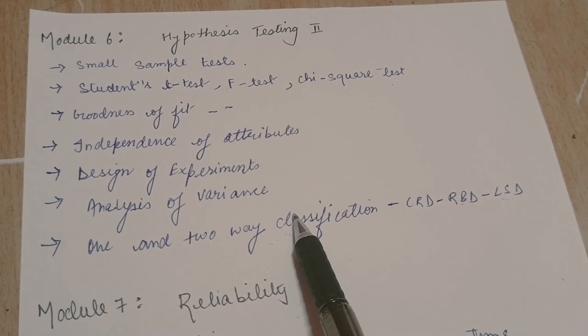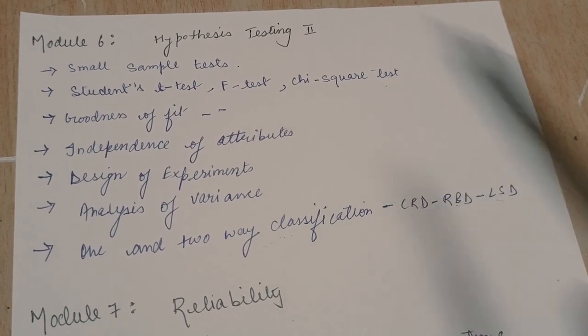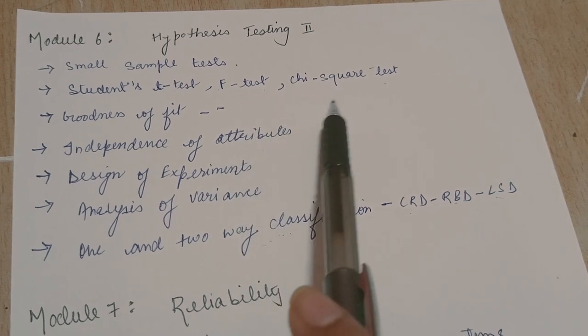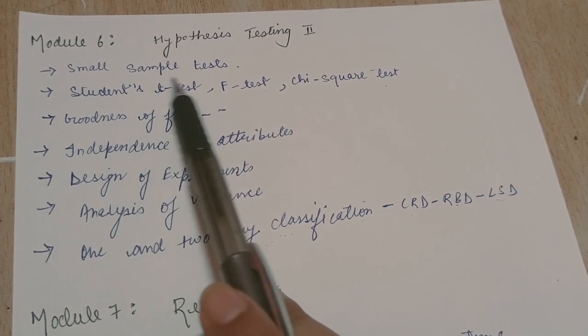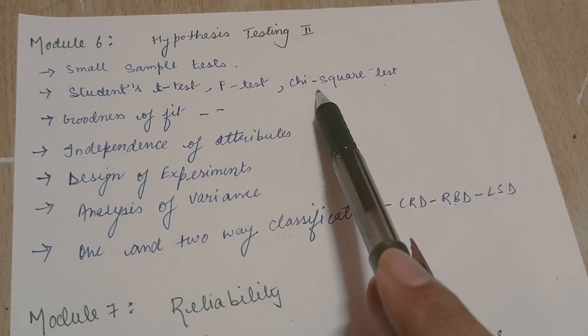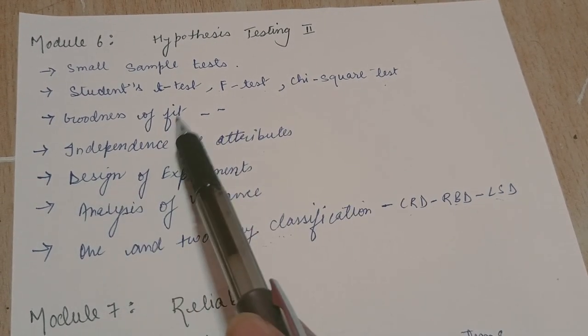Next module is module 6. That is continuation of module 5, hypothesis testing 2. In the last module we have seen large sample test. In this module we would see small sample tests - students t test, f test, chi square test.